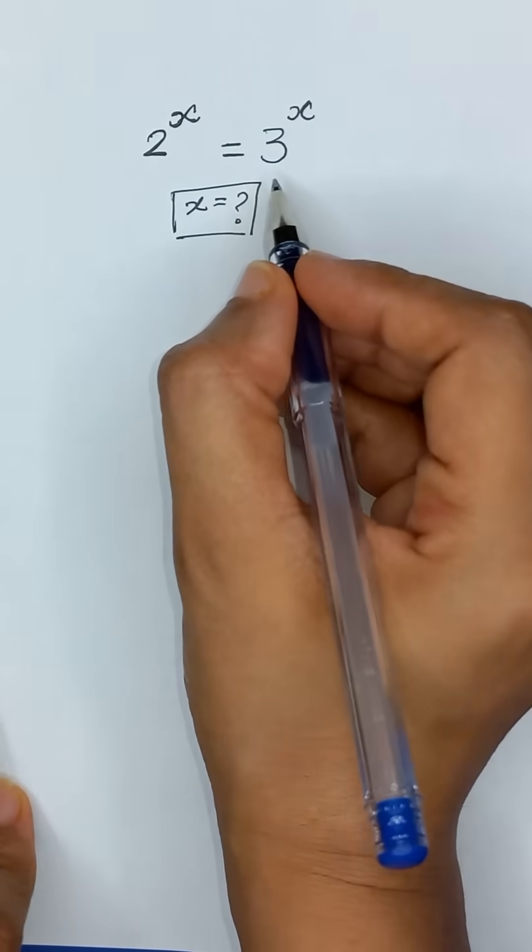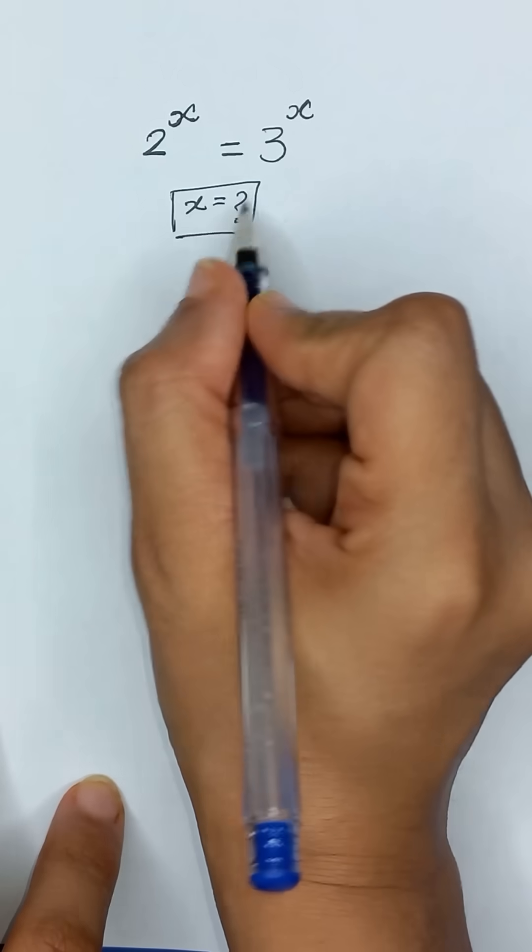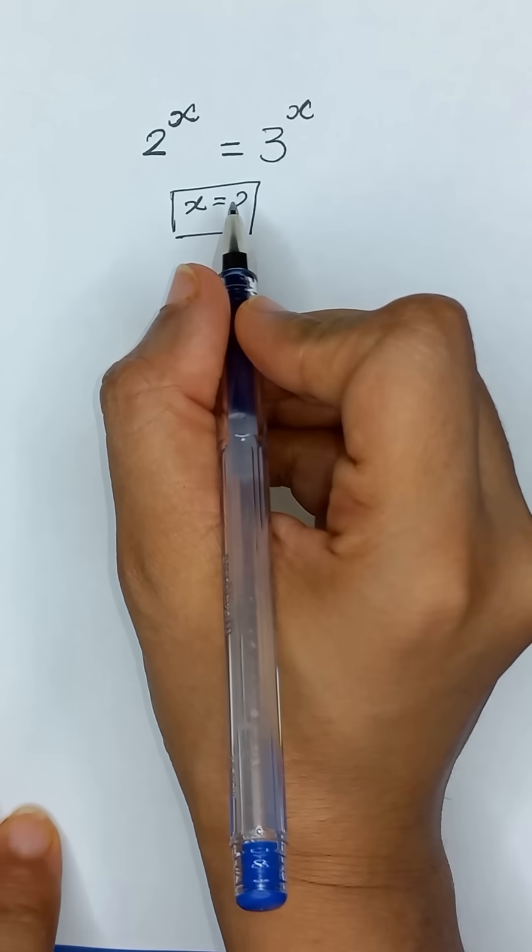2 to the power x is equal to 3 to the power x and we will solve this exponential equation for x.